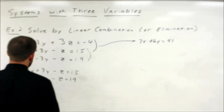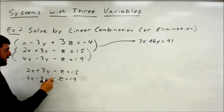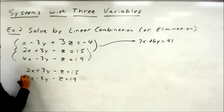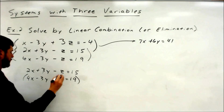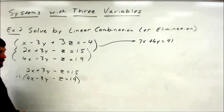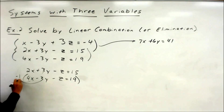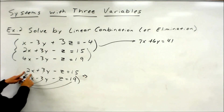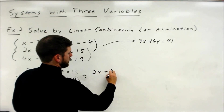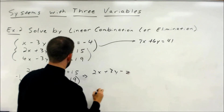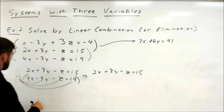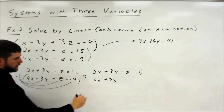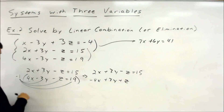Negative z and negative z — to make them opposite coefficients, they're already the same number, negative 1 and negative 1, so we need to make them opposites. Multiply one of them by negative 1; it doesn't matter which equation I use. Distribute it to all four parts — all three coefficients and your constant — so we get 2x plus 3y minus z equals 15. Second equation: negative 4x plus 3y, and negative 1 times negative 1 gives us positive z. Negative 1 times 19 is negative 19.